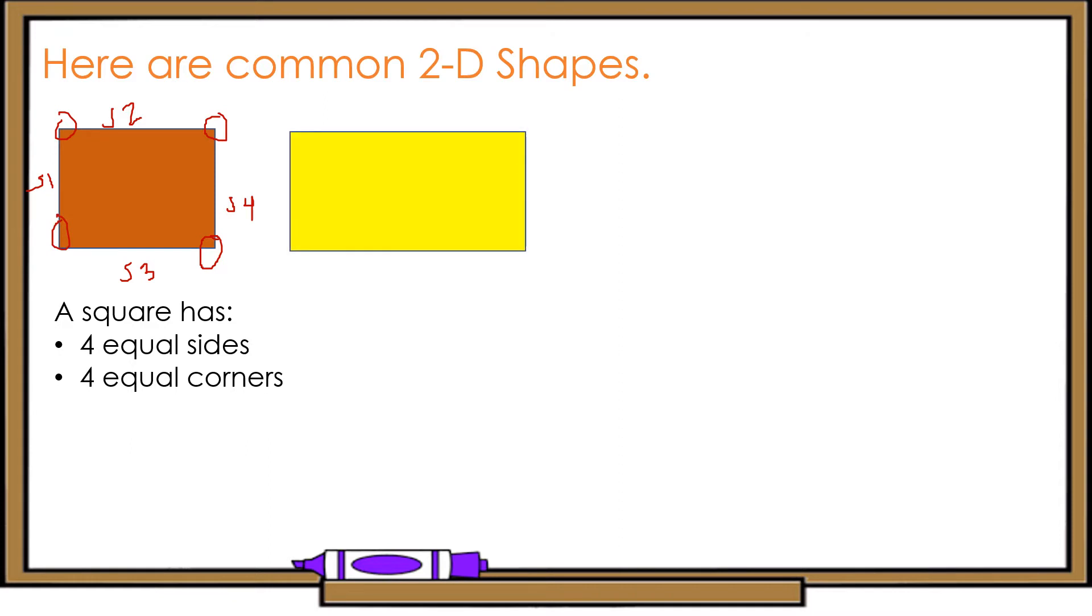Next, this is a rectangle. A rectangle has 4 sides and 4 equal corners. So, these are the corners. And it has length and width. The measurement of the length is equal and the measurement of the width is equal also.